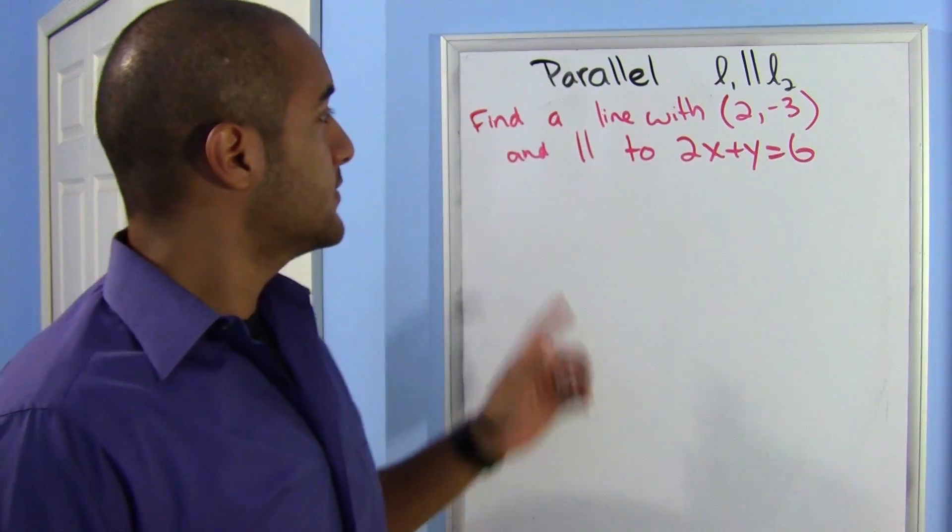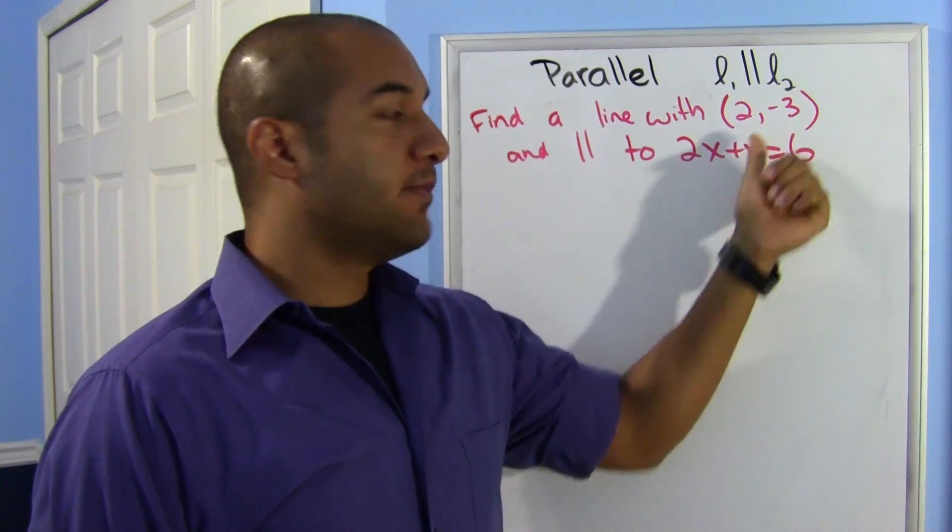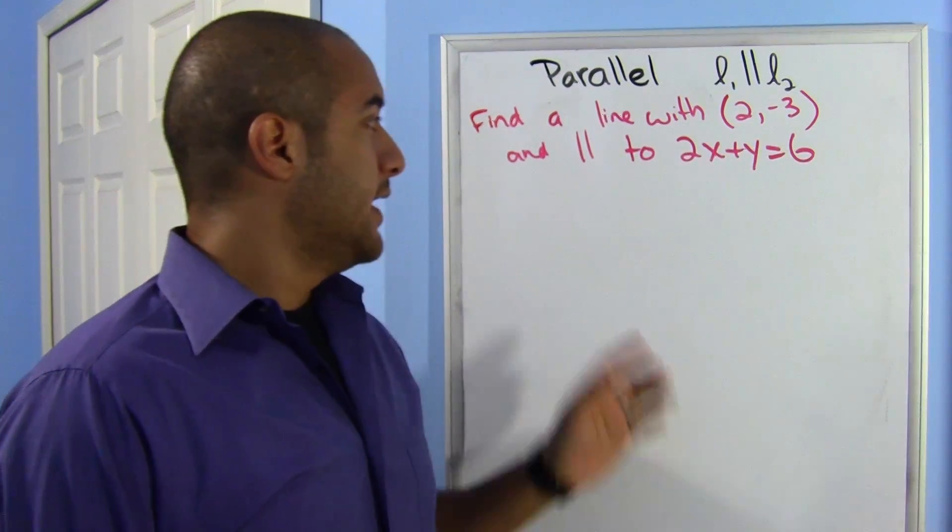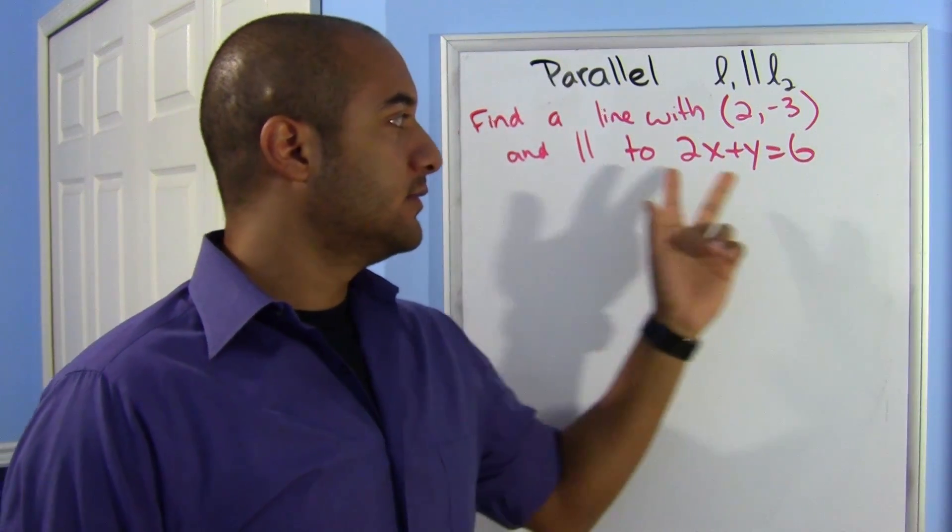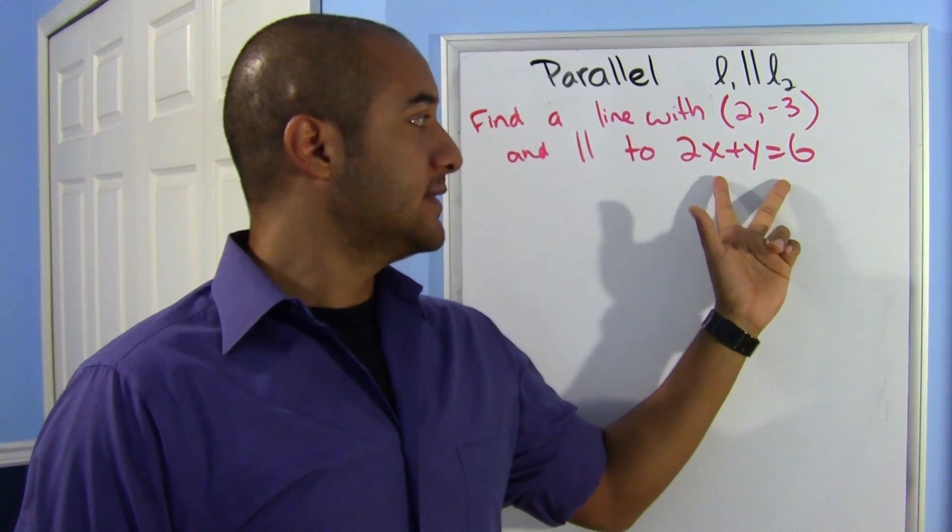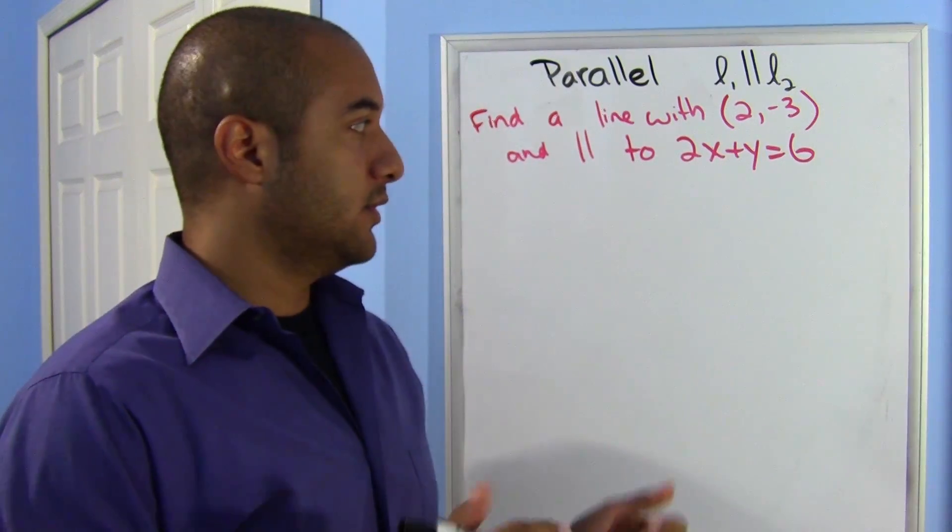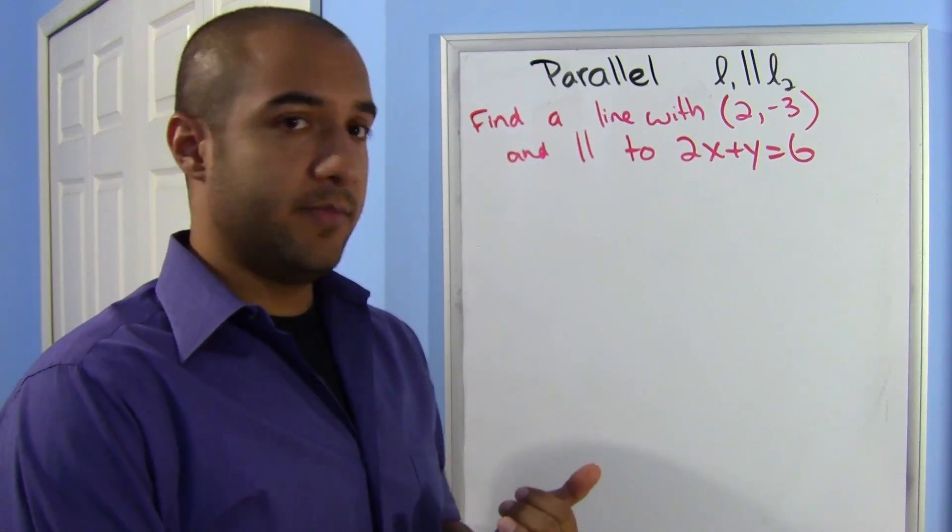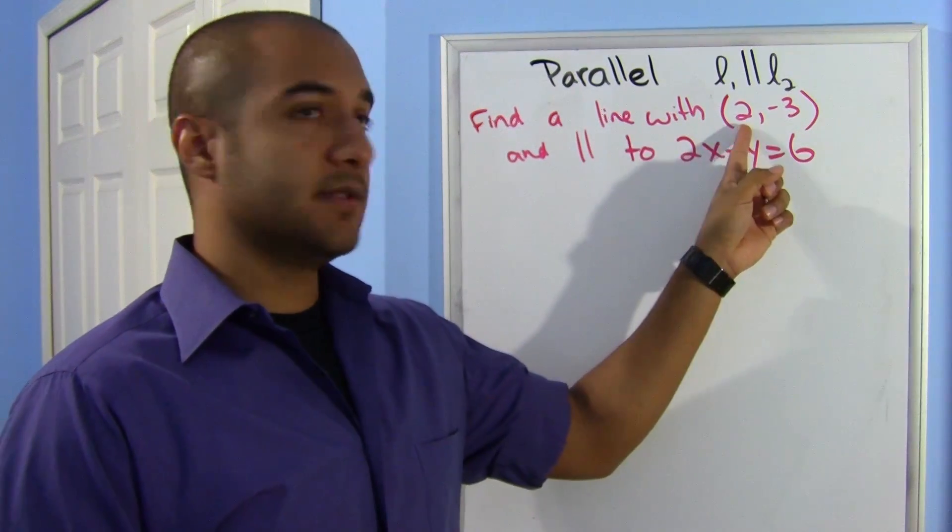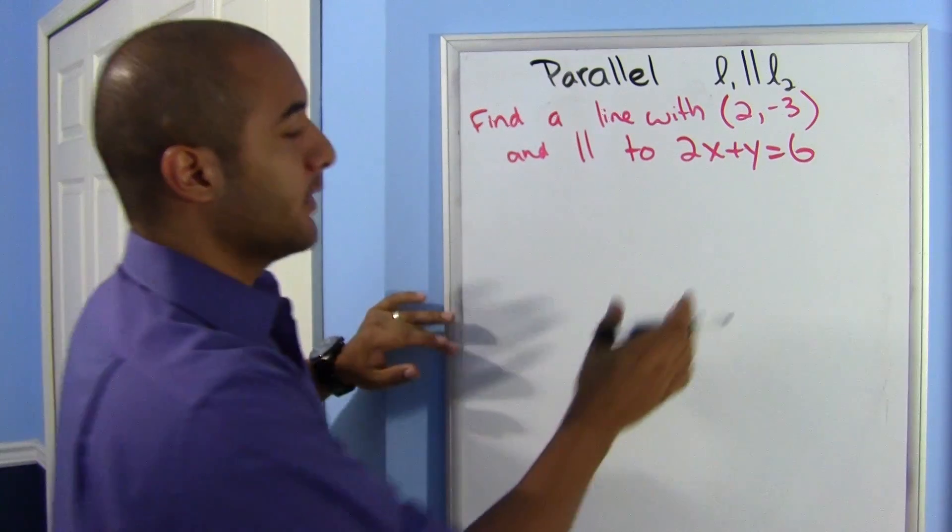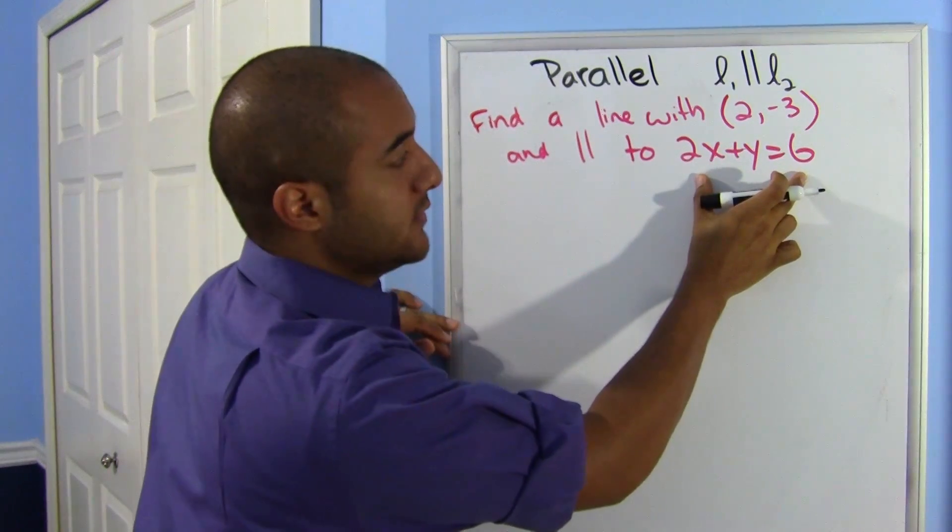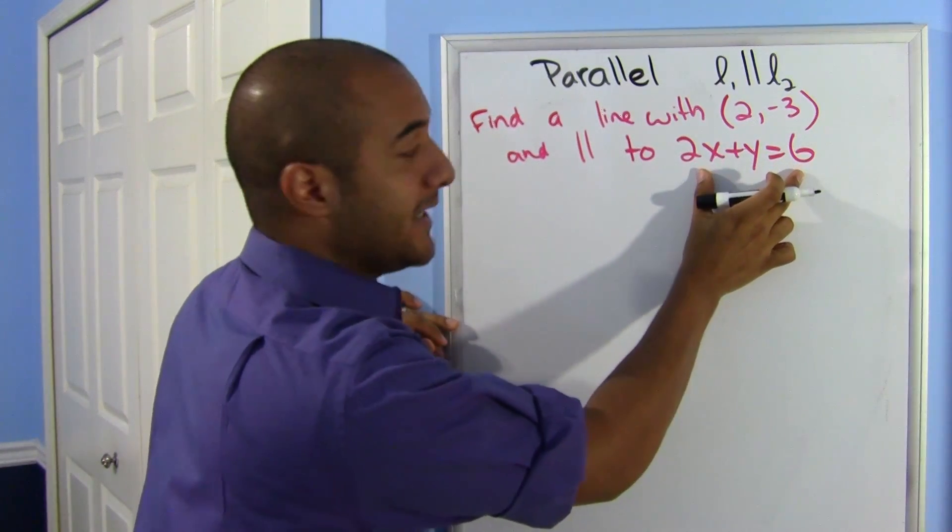Alright, here they're asking us to find a line with this point, (2, -3), and they want it to be parallel to a different line. In this case, 2x plus y equals 6. So remember, we need to know the slope and we'll be using this point. First, let's find out what slope we need to use.